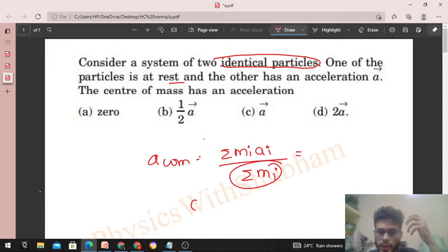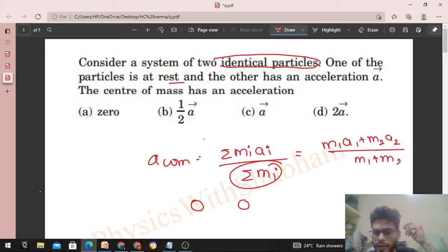So if we have two particles in a system, then it will be m1 a1 plus m2 a2 divided by m1 plus m2. And if both the particles are identical, both are the same particle, then m1 will be equal to m2.